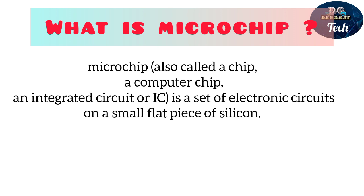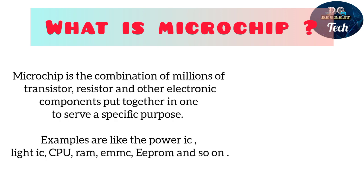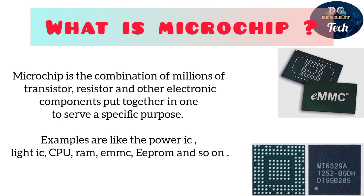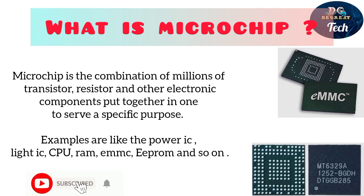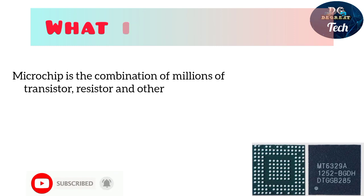Microchip — also called a chip, computer chip, integrated circuit, or IC — is a set of electronic circuits on a small flat piece of silicon. A microchip is the combination of millions of electronic transistors, resistors, and other electronic components put together in one package to serve a specific purpose. Examples include the power IC, LIDOC, CPU, RAM, MC, EEPROM, and so on.